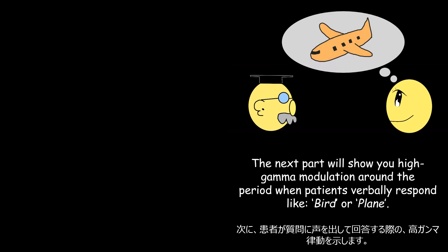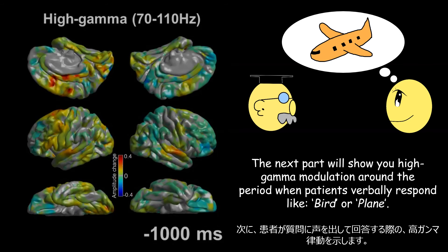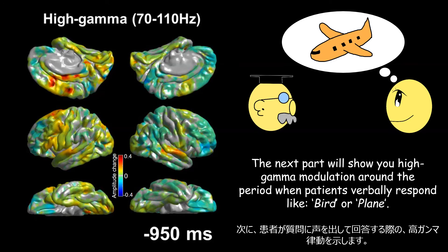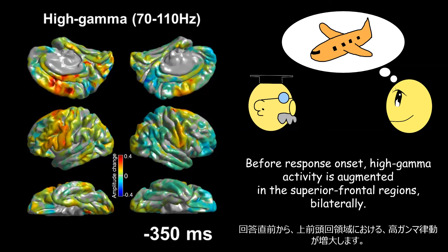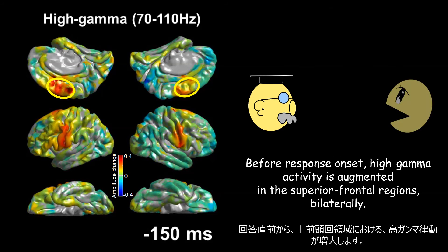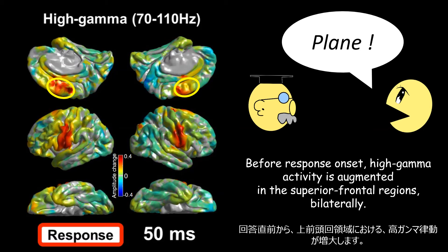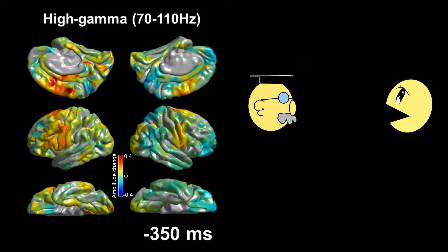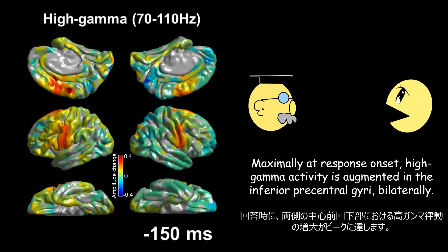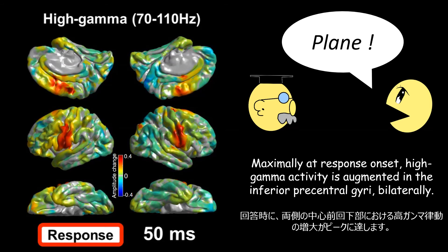The next part will show you the high gamma modulations around the period when patients verbally respond, like 'bird' or 'plane.' Before response onset, high gamma activity is augmented in the superior frontal regions bilaterally. Maximally at response onset, high gamma activity is augmented in the inferior precentral gyri bilaterally.